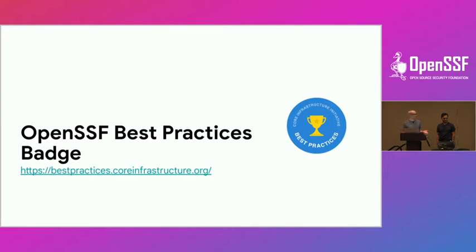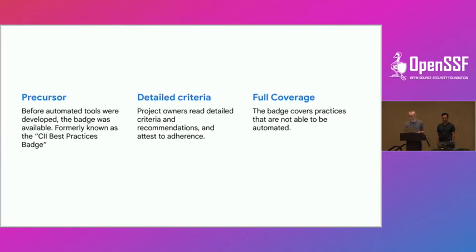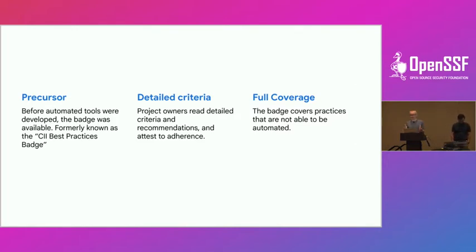That brings us to the OpenSSF Best Practices Badge — a precursor to the automated tools developed to judge trustworthiness. Formerly known as the CII Best Practices Badge, it predates OpenSSF. It's not an automated tool you run; it's text-based. You go and look at the requirements to meet these best practices. If you attest to meeting them, then you get the badge.